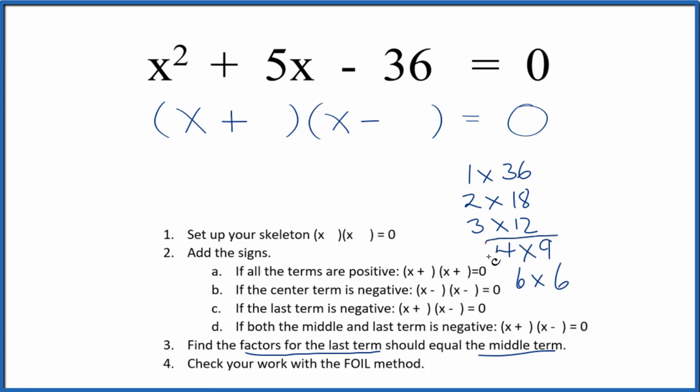It looks like 4 and 9. The difference between 4 and 9 is 5. So if I want a positive 5, let's put the 9 here and the 4 here. Because 9 and minus 4, that would give us the 5.